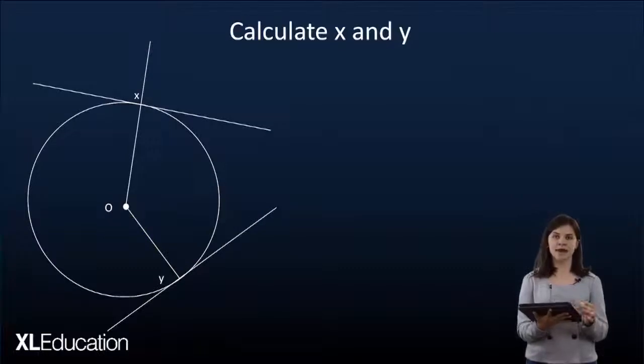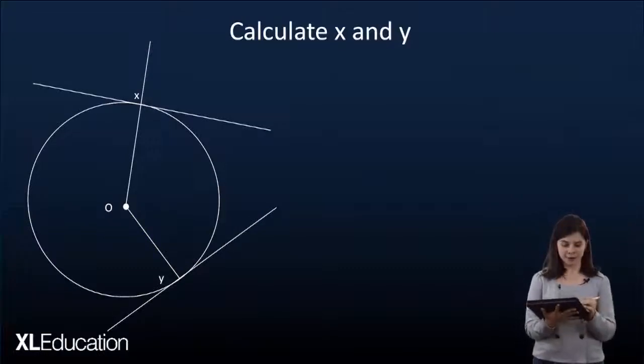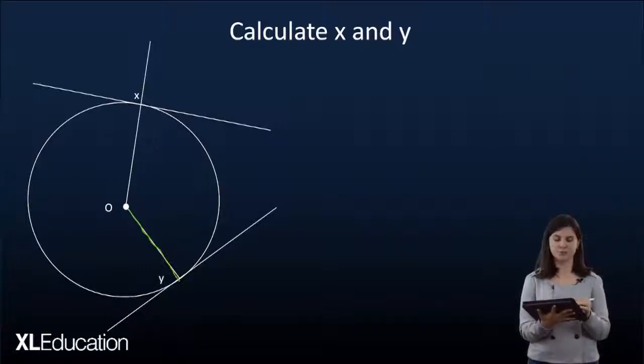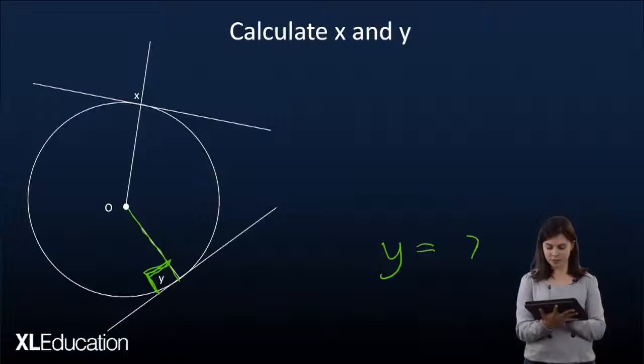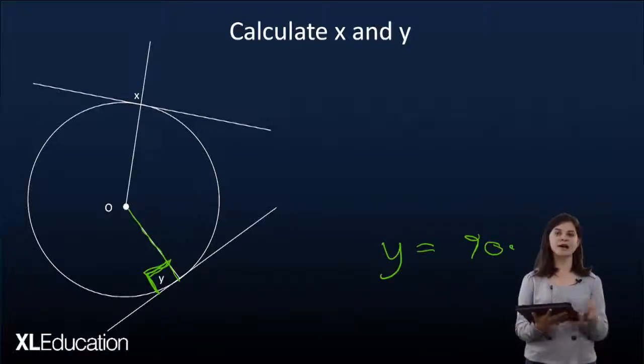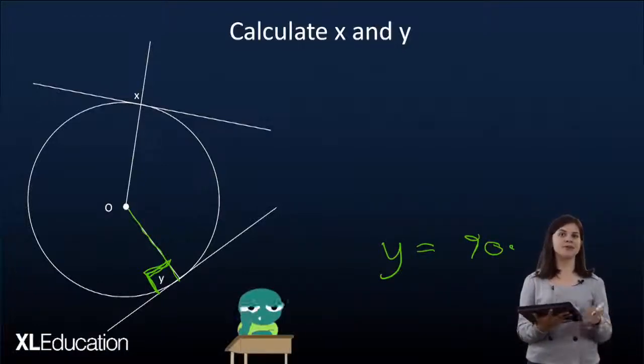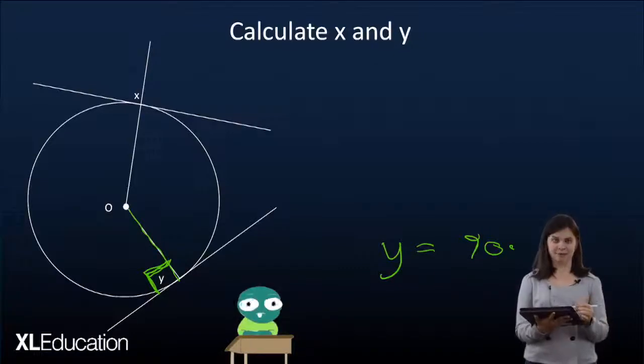Here we have two lines, we have x and y. Let's start with y. We can see we've got a radius over here and a tangent and an angle between it that is unknown. That y value we know is going to equal 90 without having to prove anything else because that relates directly to our theorem.